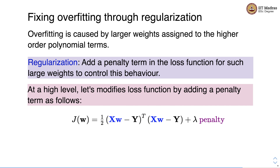If lambda is 0, then the effective penalty is 0 and we get a loss function which is exactly the same as the linear regression loss function. Whereas if lambda is infinity, the amount of penalty we add overpowers the term on the left and we essentially get very high bias models. We will see how the model fit changes with different values of lambda in a few slides.